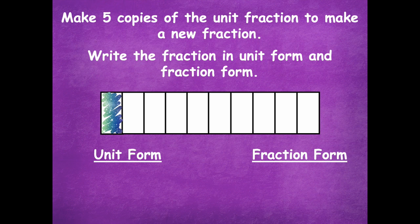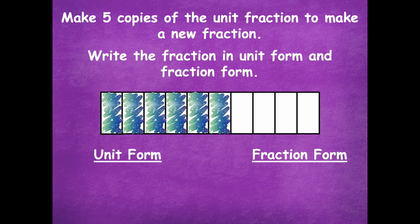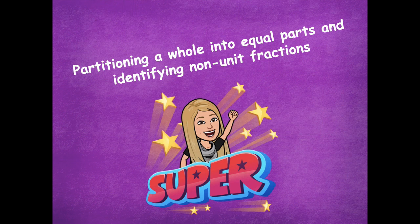Here are my five copies — one copy, two copies, three, four, and five copies. Now I have six parts that are shaded, so my unit form is 'six-tenths,' and my fraction form is six over ten — six parts are shaded, ten total parts. You guys did an awesome job partitioning a whole into equal parts and identifying non-unit fractions. Please head back to the module to see what you need to complete for your independent practice.